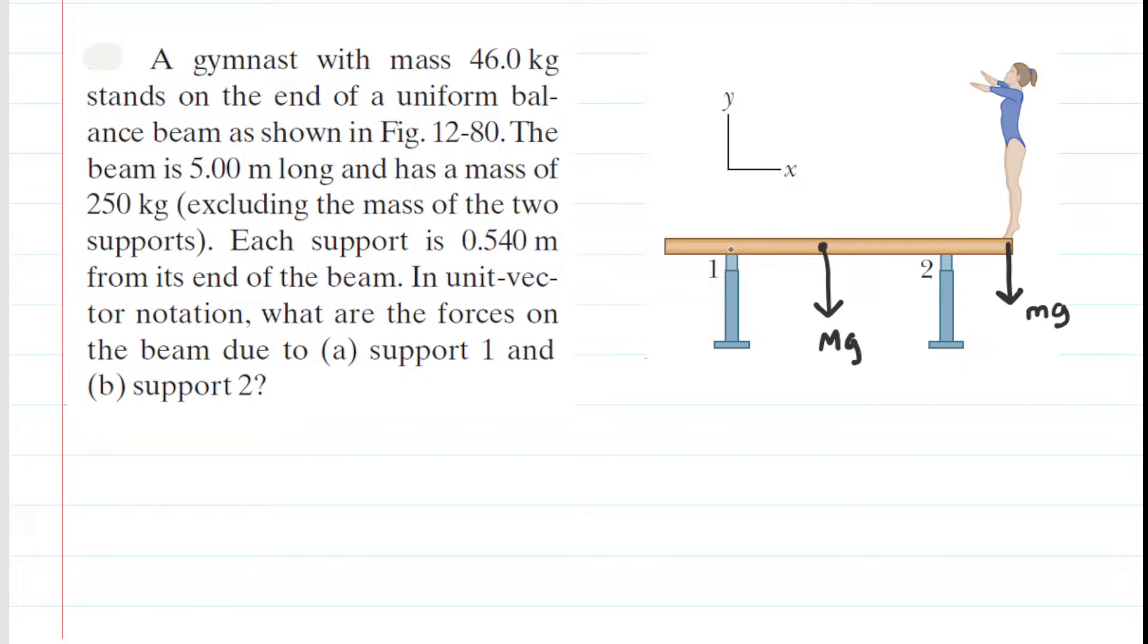In addition, we have these supports pressing up on the beam in order to prevent it from accelerating downward. We can call this force acting at support 1 F sub 1 and then the force acting at support 2 F sub 2. So those are the four forces acting on the beam.